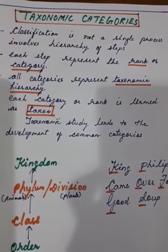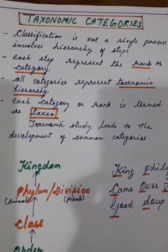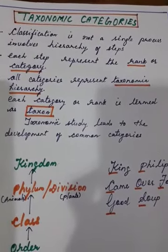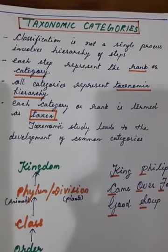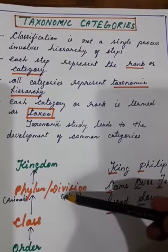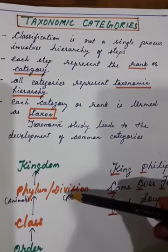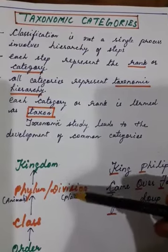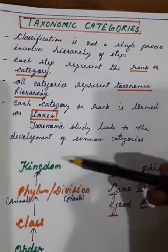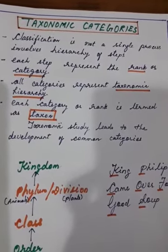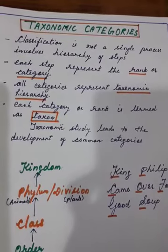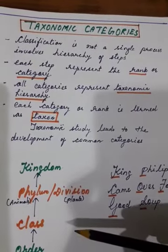Classification is not a single process; it involves a hierarchy of steps. Each step represents a rank or category. The kingdom is a category, phylum or division is a category — all these categories are also named as ranks. All these categories together represent taxonomic hierarchy. Each category or rank is termed a taxon.